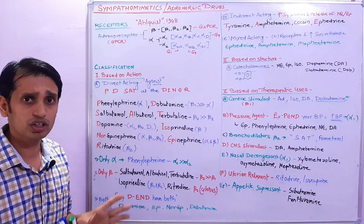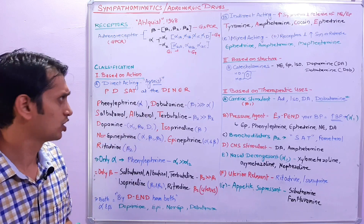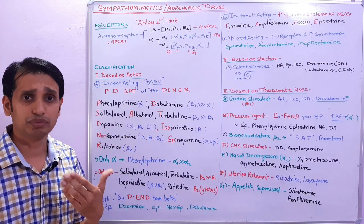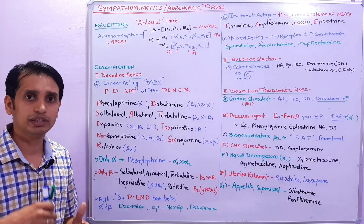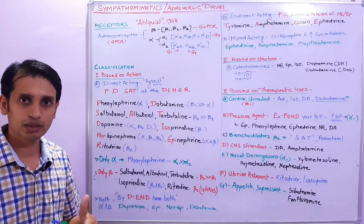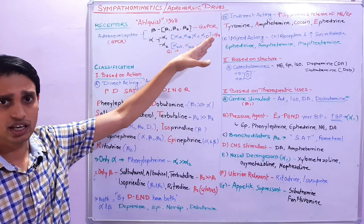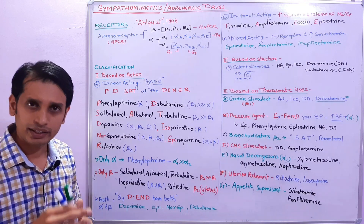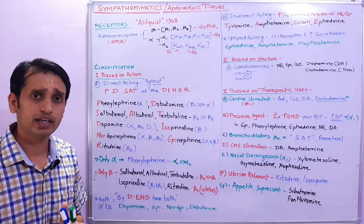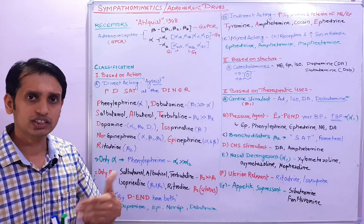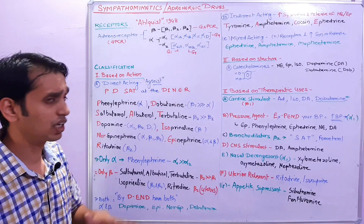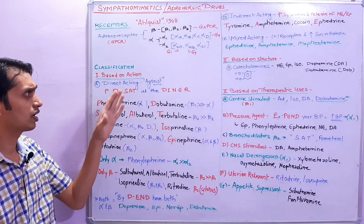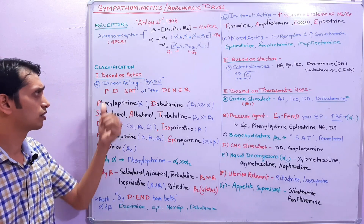Before discussing the drugs, we should know what is direct-acting, indirect-acting, and mixed-acting. Direct-acting drugs are those which have the ability to activate the receptors and produce the cellular signals. These are basically agonists.